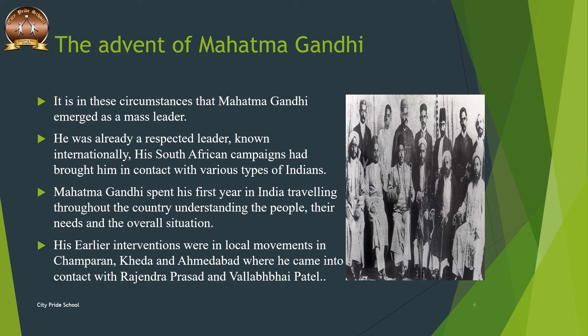His South African campaigns had brought him in contact with various types of Indians — Hindus, Muslims, Parsis, Christians, Gujaratis, Tamils, and North Indians — and also upper-caste merchants, lawyers, and workers. Mahatma Gandhi spent his first year in India travelling throughout the country, understanding the people, their needs, and the overall situation. His earliest interventions were in local movements in Champaran, Kheda, and Ahmedabad, where he came in contact with Rajendra Prasad and Vallabhbhai Patel, and in Ahmedabad he led a successful mill workers' strike in 1918.